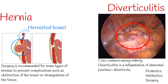Treatment for diverticulitis: probiotics can provide some improvement, and a high-fiber diet can be advised. In complicated cases, antibiotics can be prescribed. Indications for surgery include abscess or fistula formation and intestinal rupture with peritonitis.